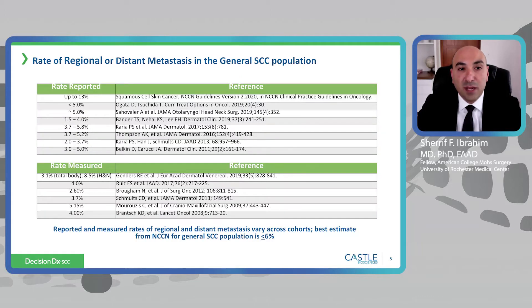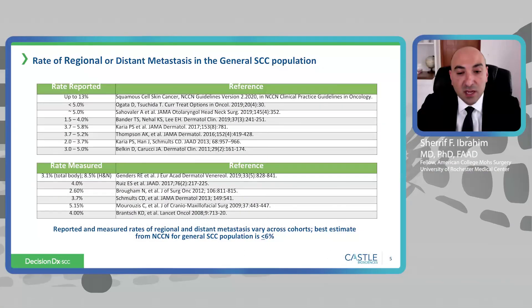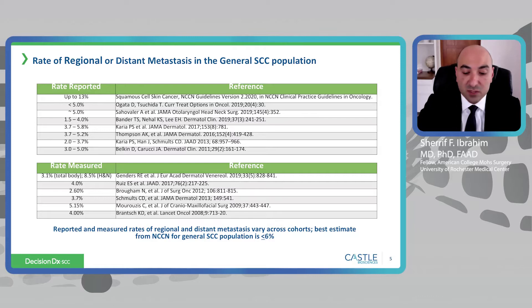When we look at the rates of regional or distant metastases in the general squamous cell population, we have a nice body of literature reporting varying rates. Looking at seminal papers in our literature, it varies from as little as 1.5% to 13% in NCCN guidelines, but really somewhere in the 2% to 6% chance for metastases — somewhere around a 6% metastatic risk for all comers with squamous cell carcinoma.